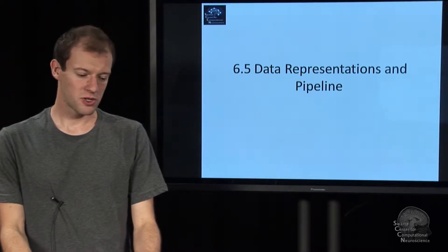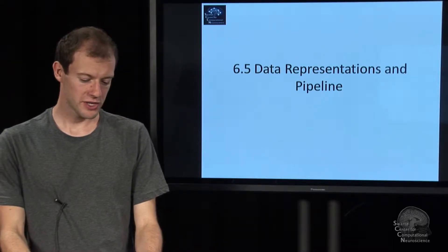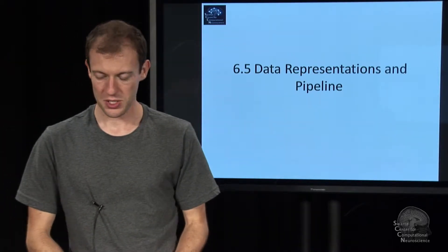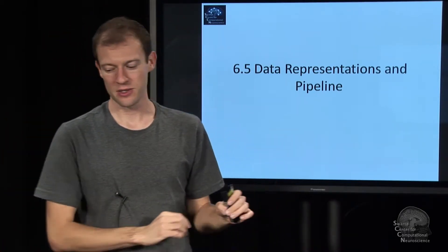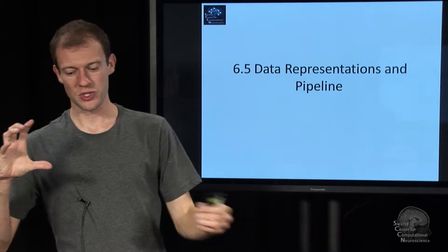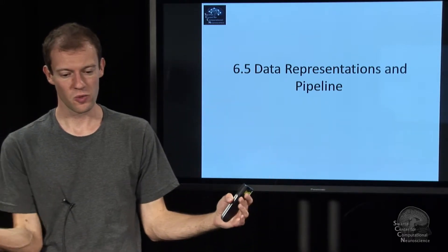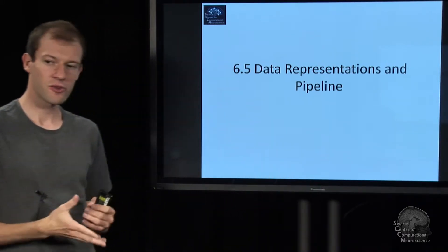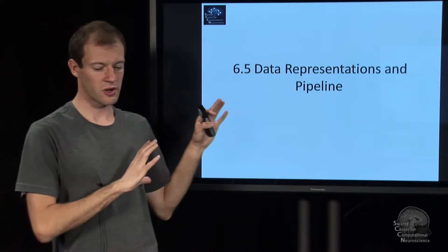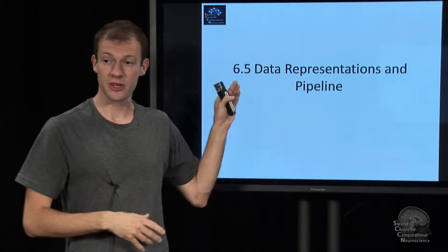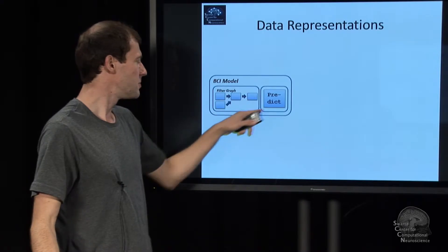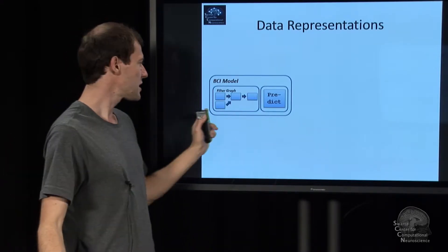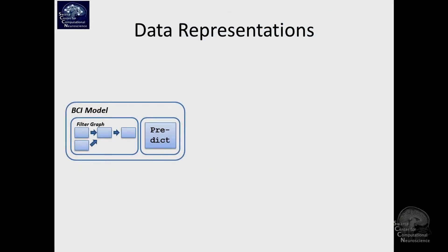The last part of this lecture talks about the data representations that flow through BCI Lab and the overall process that the pipeline implements. It's a different way of viewing the data flows shown before. We've already discussed the BCI model — it's basically a MATLAB struct that contains a field describing a filter graph.